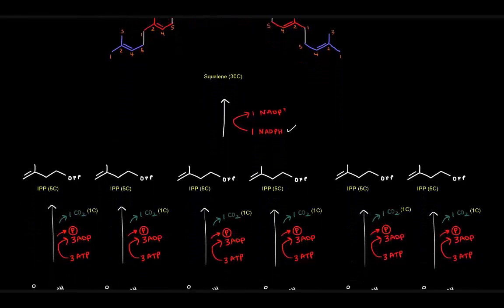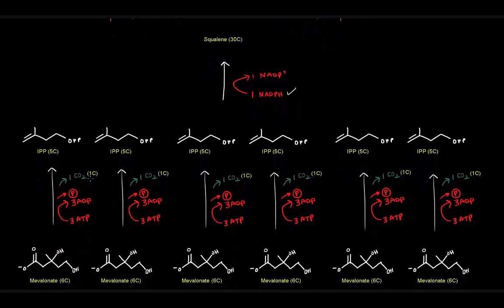Where did we get these IPPs from? We got them from mevalonate, each of them, and in each of those reactions, we lost one carbon dioxide, and we used up three ATPs. So if we total that up, that means we've got three times six, so that's 18 ATP molecules used, and here we have six carbon dioxides that leave produced.